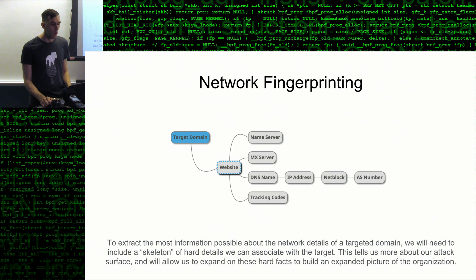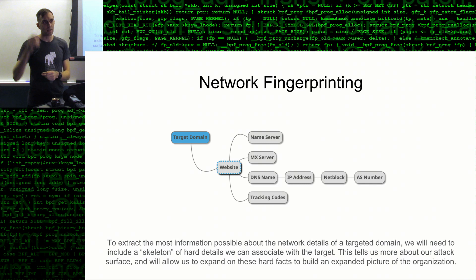Today we're going to get into network fingerprinting. We're going to build what I like to think of as a backbone of our investigation — a chain from top to bottom that you can build off and expand on to learn more about the target. When you get to the bottom of this chain, you go back up, because you've discovered information as you go down, and expanding from the bottom up builds a really detailed picture of the organization.